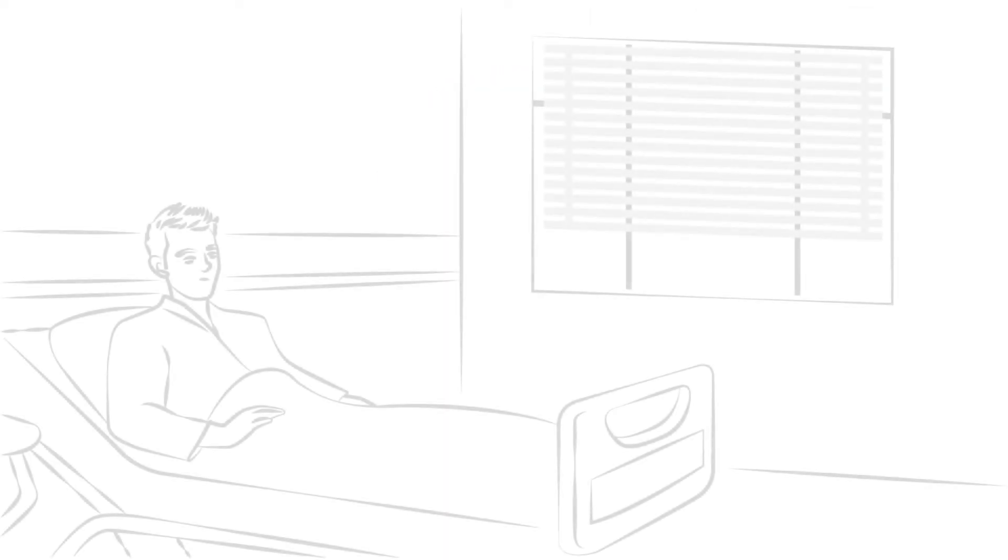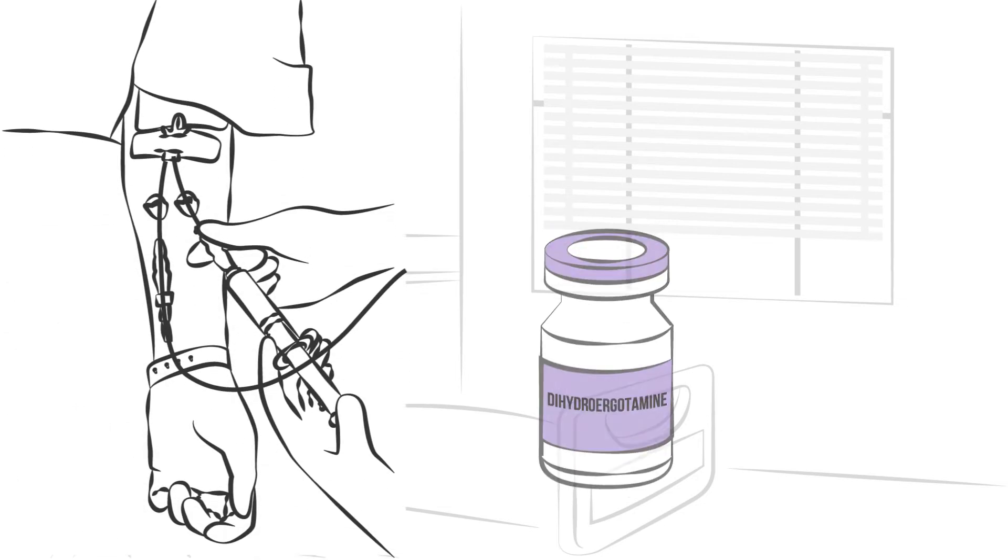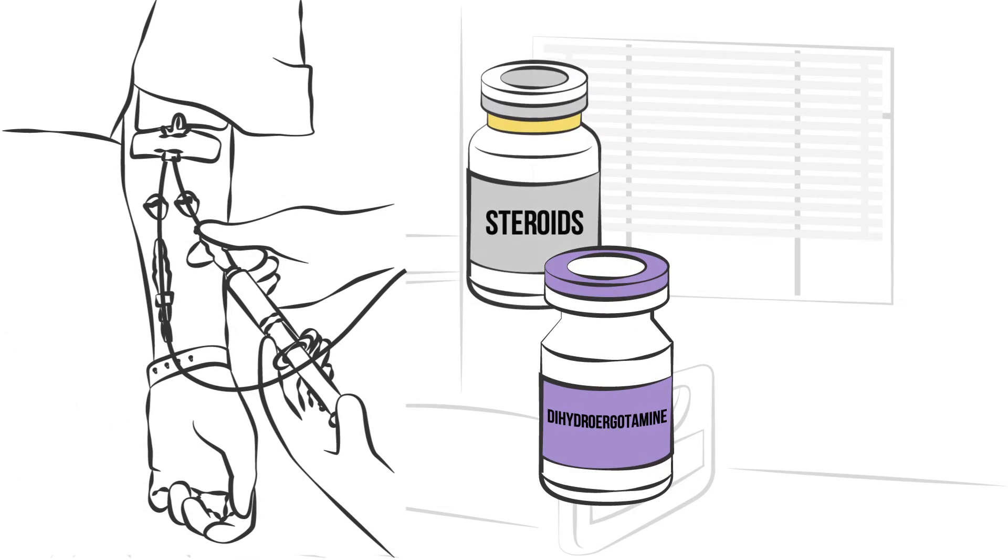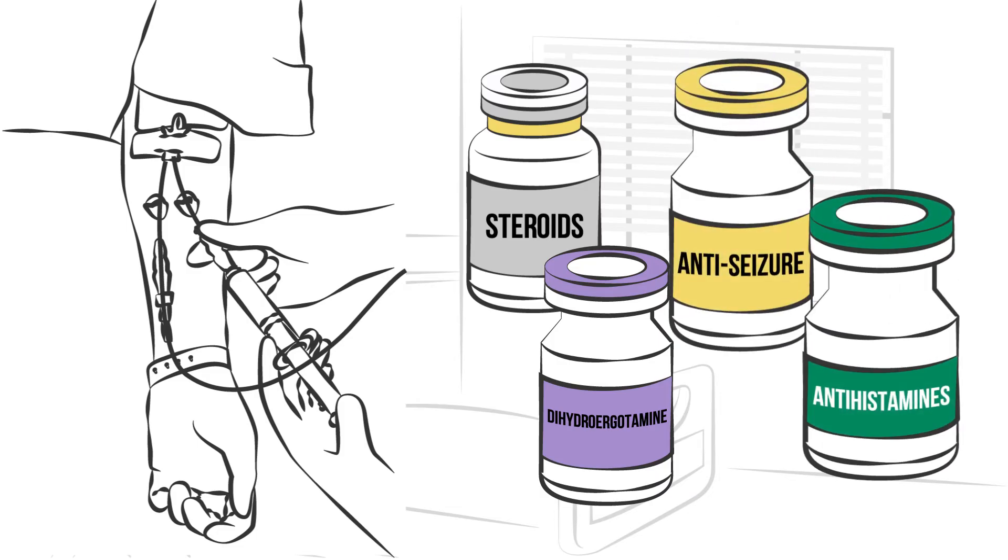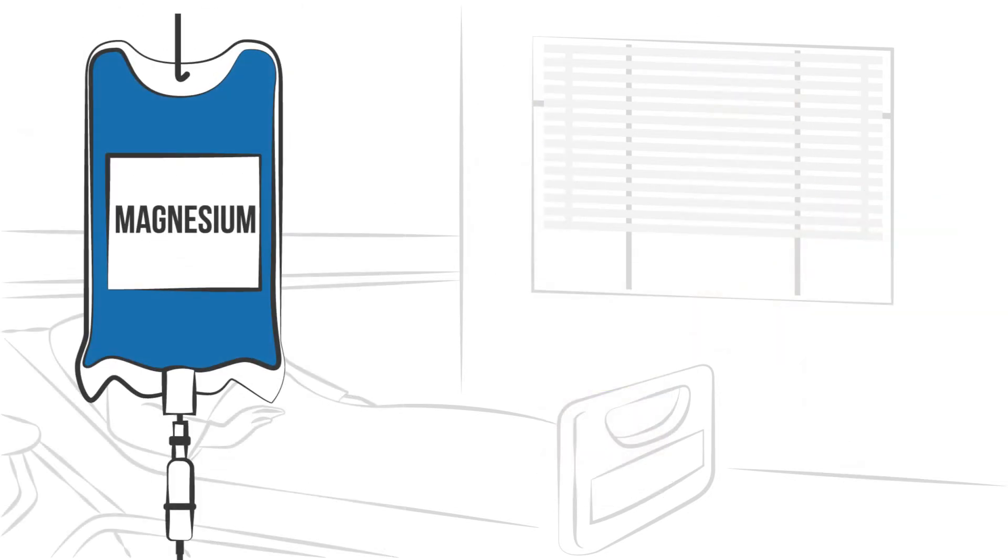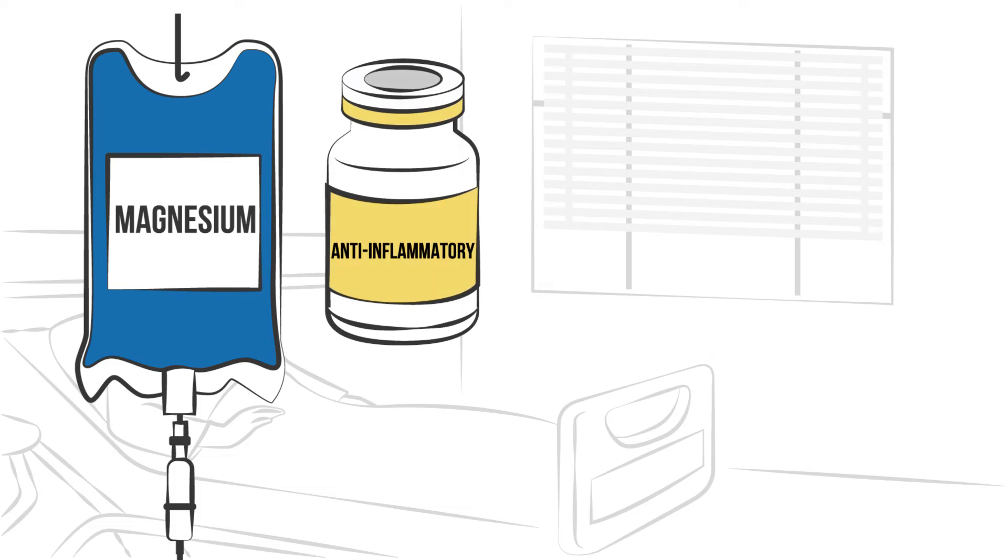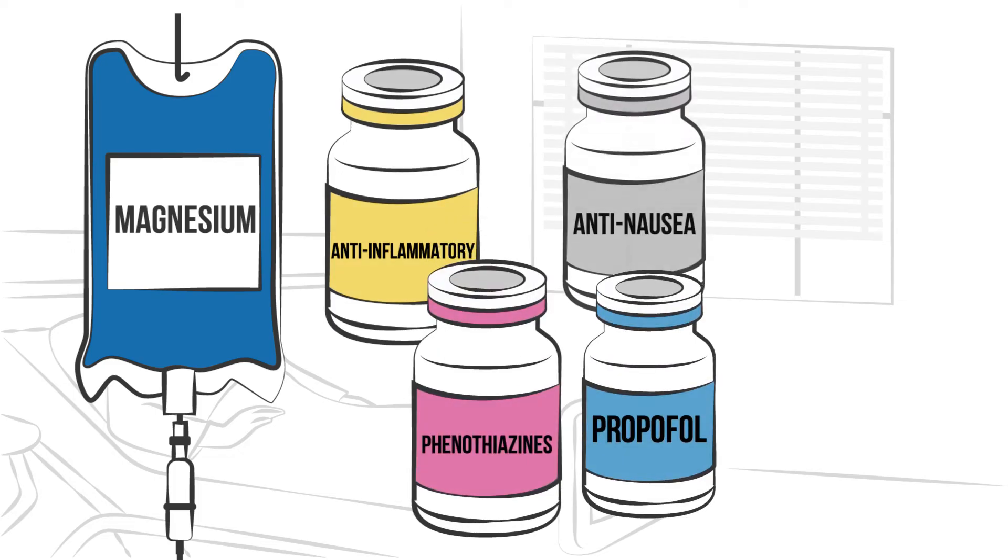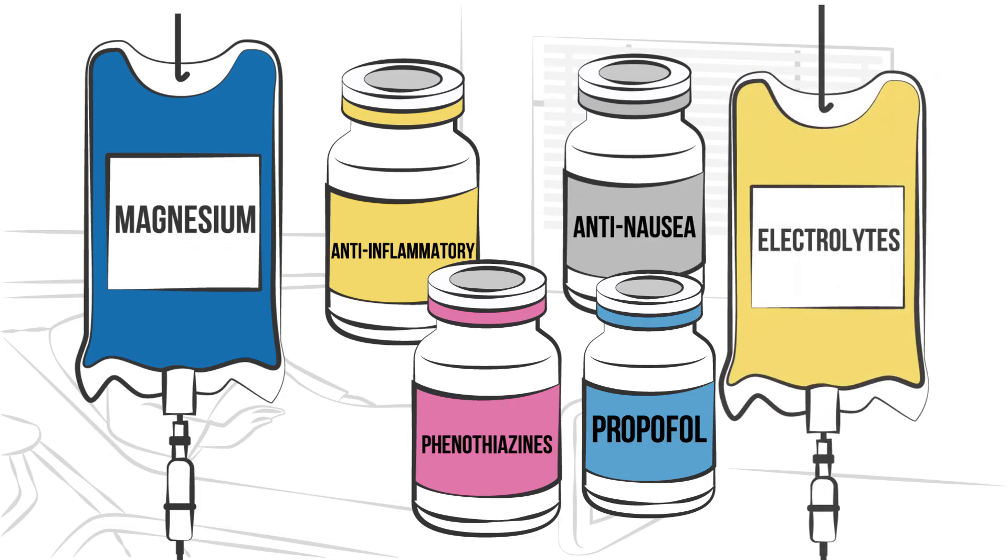Emergency department or inpatient care can include intravenous treatments such as dihydroergotamine, steroids, anti-seizure medications, antihistamines, magnesium, anti-inflammatory medications, phenothiazines, anti-nausea medications, and electrolytes.